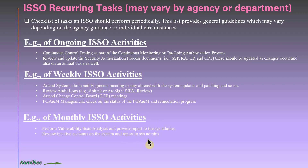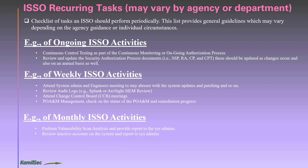Also monthly, review inactive accounts on the system and report to system admins. You can request reports from Active Directory, Cisco ACS, or other authentication and authorization systems. Go through the list of active accounts, verify that all individuals are still present, and flag any accounts that are no longer active so they can be disabled.